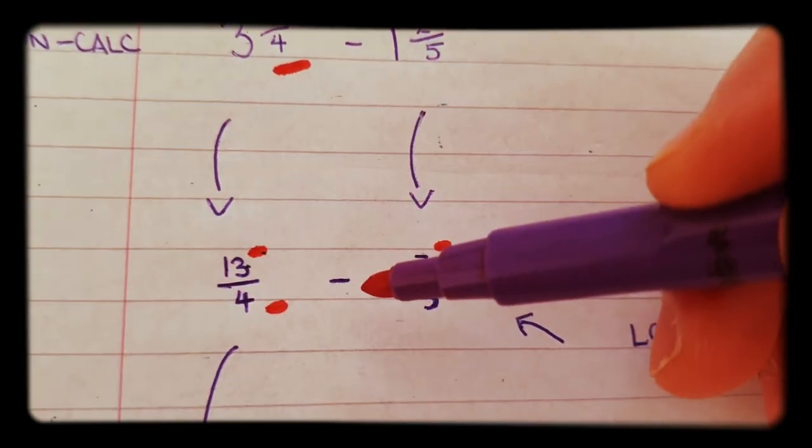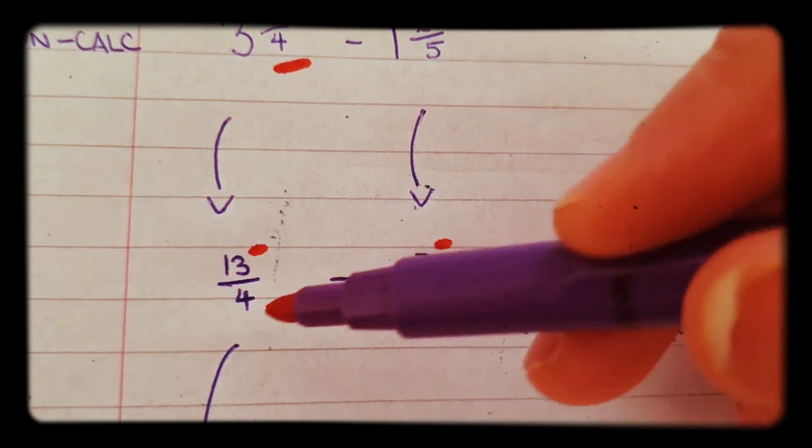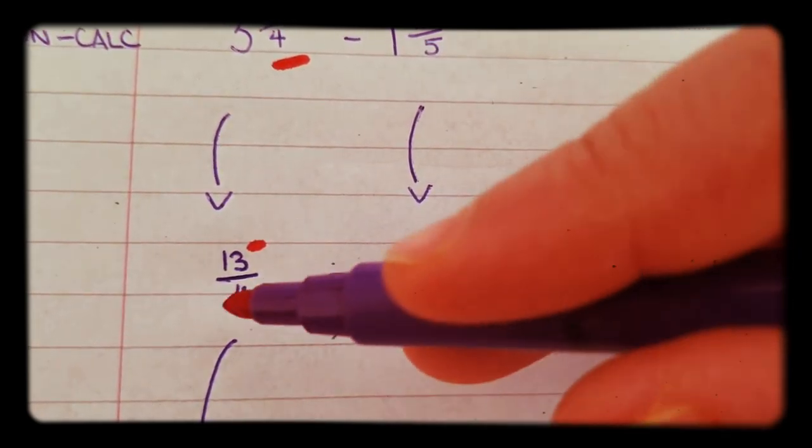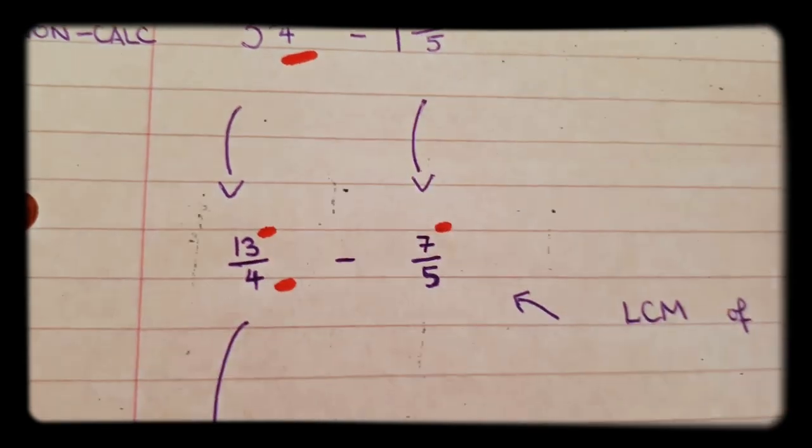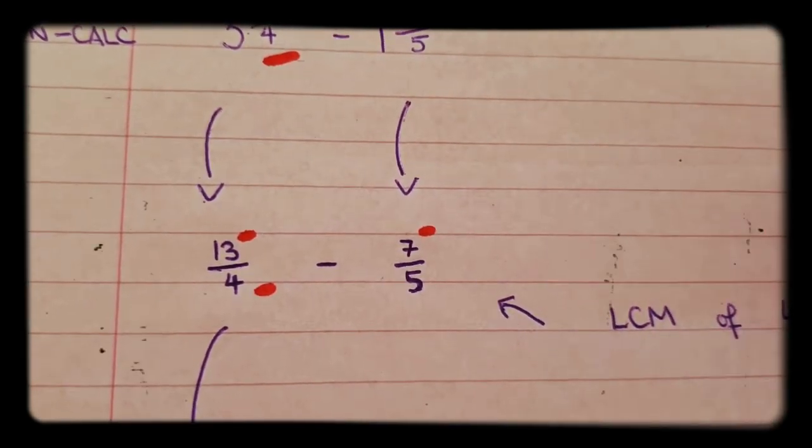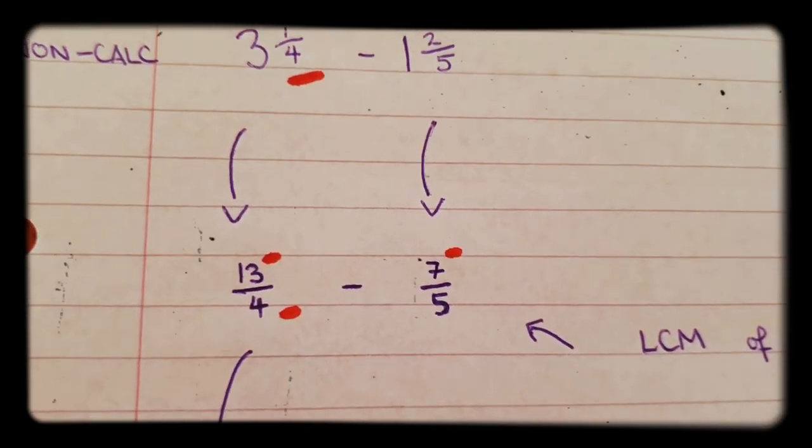Now, because we cannot minus these two together, they don't have the same denominators. That's a four and that's a five. We need to turn it into equivalent fractions where they do have the same denominators.